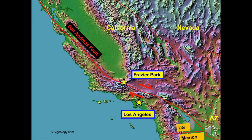Here, the fault is not a knife-edge feature, but rather a quarter-mile-wide zone of broken crust. Before showing features of the fault zone, let's look at the big geologic picture.